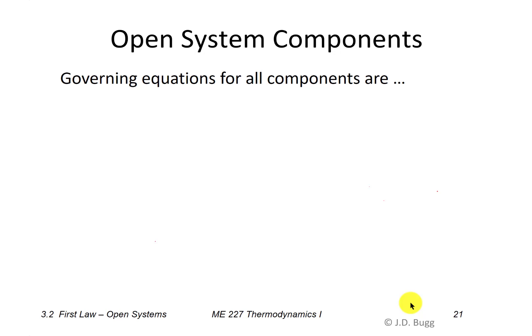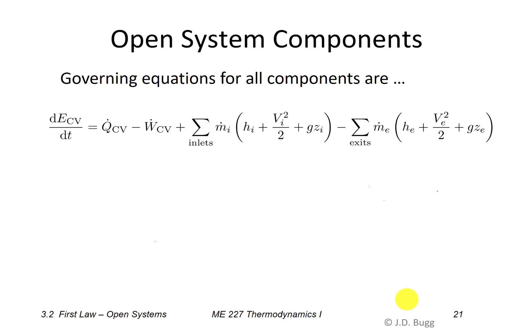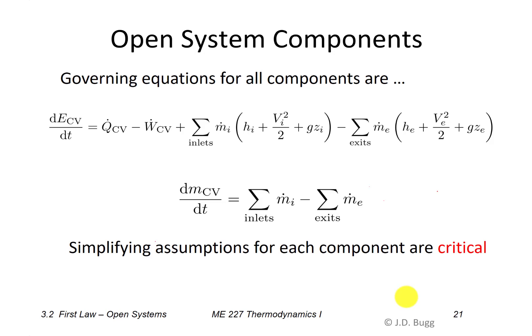This lecture is going to take the conservation of energy equation we just developed and apply it to a whole series of open system components. The governing equations for all components are conservation of energy and conservation of mass. The key thing is to discuss the simplifying assumptions for each component — we need to recognize which terms in the energy equation are most important for each particular type of equipment.